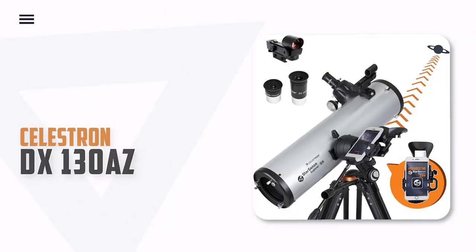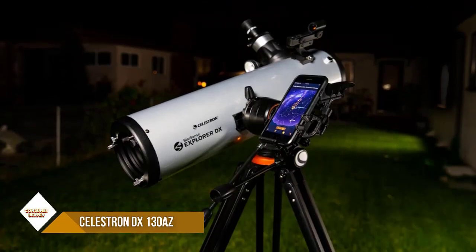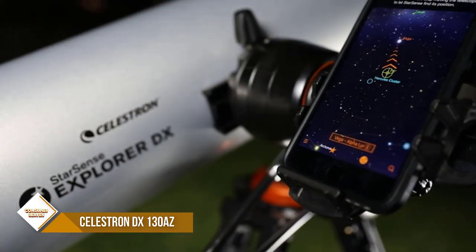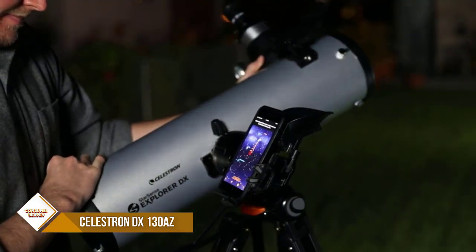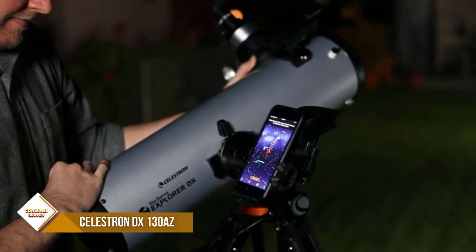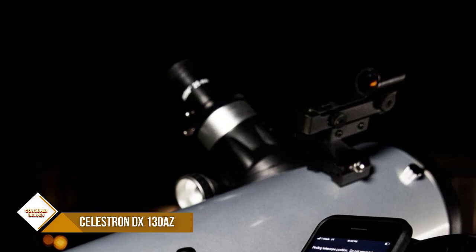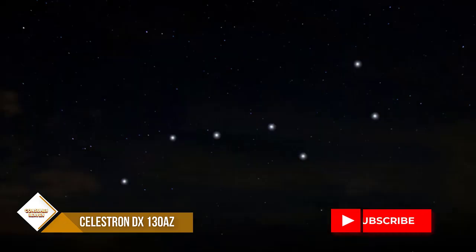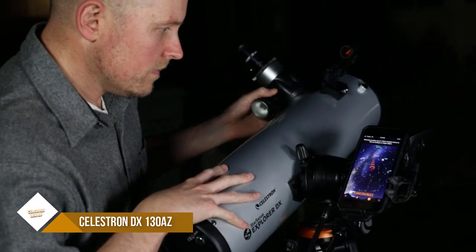Number 2. Celestron Starsense Explorer DX-130AZ. The Celestron DX-130AZ Telescope is an ideal telescope for the aspiring astronomer. This telescope combines powerful optics, a sturdy mount, and a range of useful accessories to provide an optimal viewing experience. With its 127mm aperture and 1000mm focal length, the DX-130AZ offers excellent light-gathering capabilities and high-resolution views of the moon, planets, and deep-sky objects.